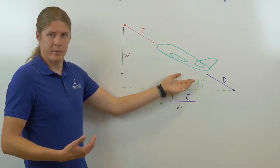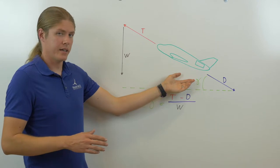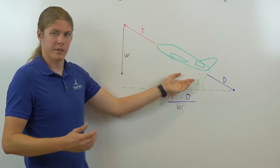This angle, gamma, is the flight path angle. It's not angle of attack. It's the actual angle of the flight path of the airplane relative to the ground.